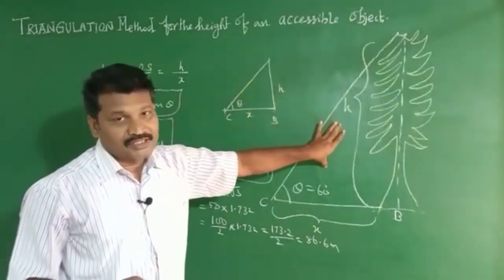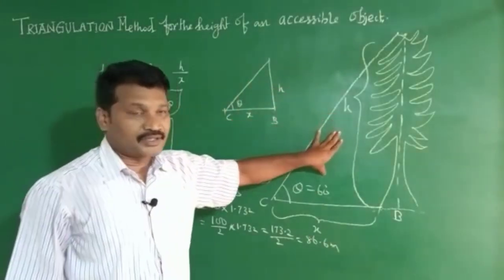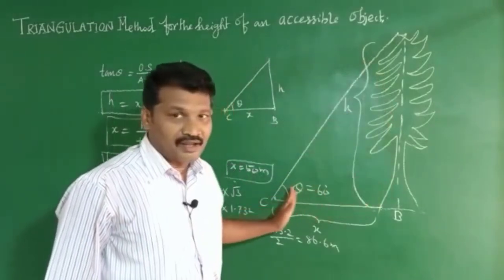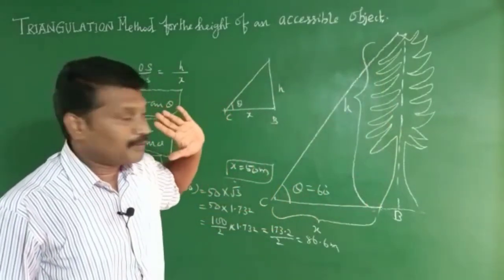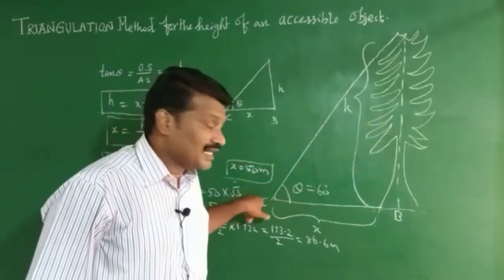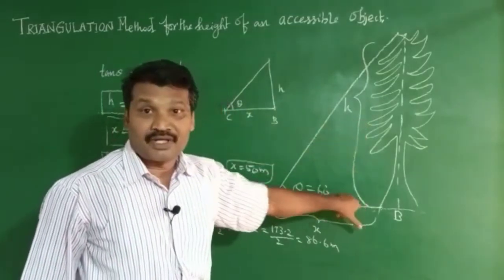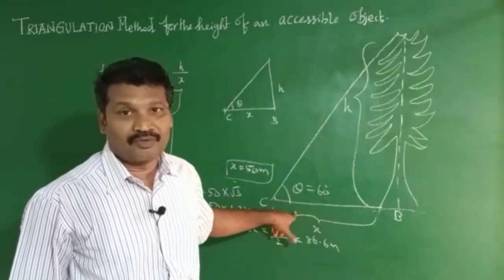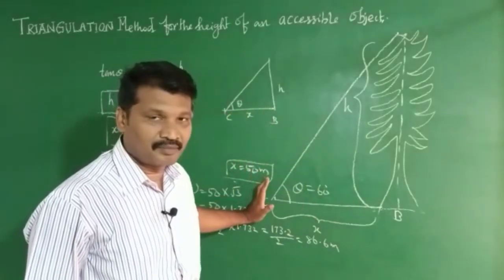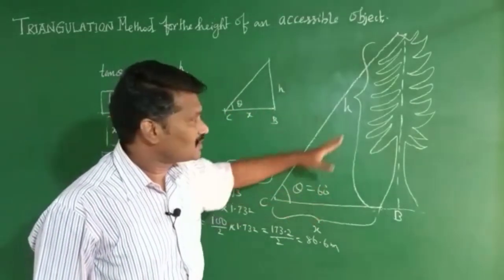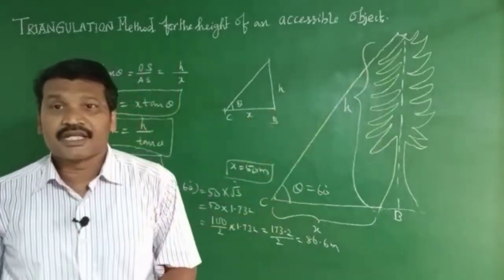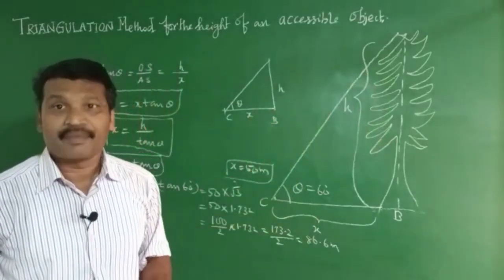This is the concept of the triangulation method. Since it forms a triangle, we can find the height as well as the distance from the observing point to the object, focusing on the distance as well as the height. Thanks for watching — keep watching, subscribe and share.